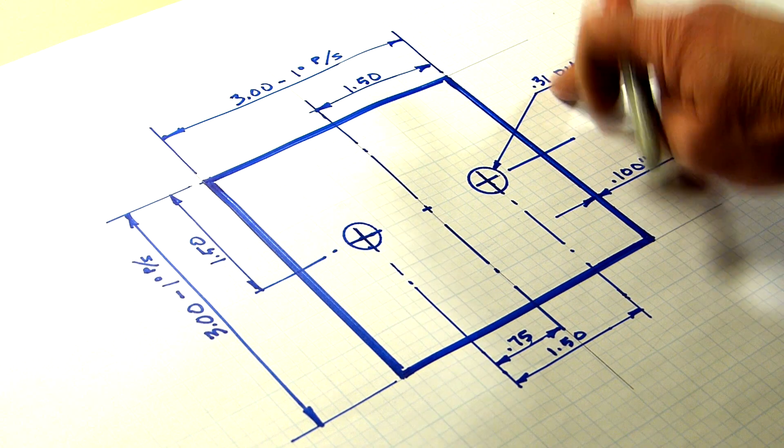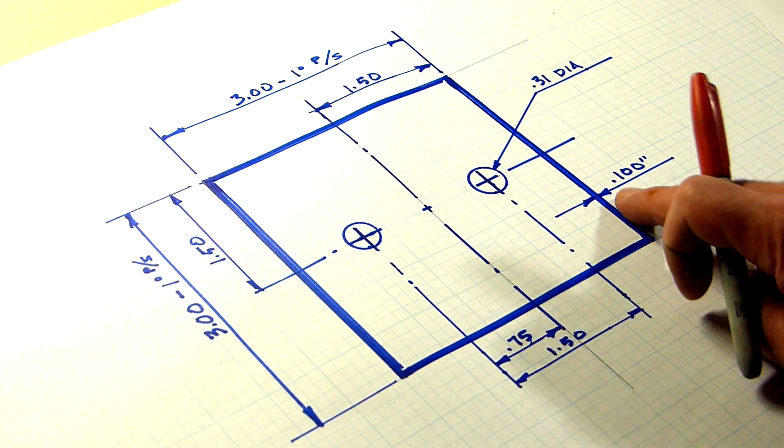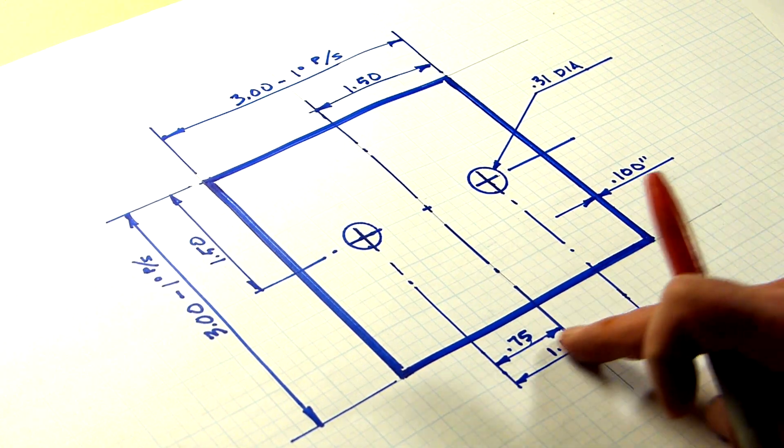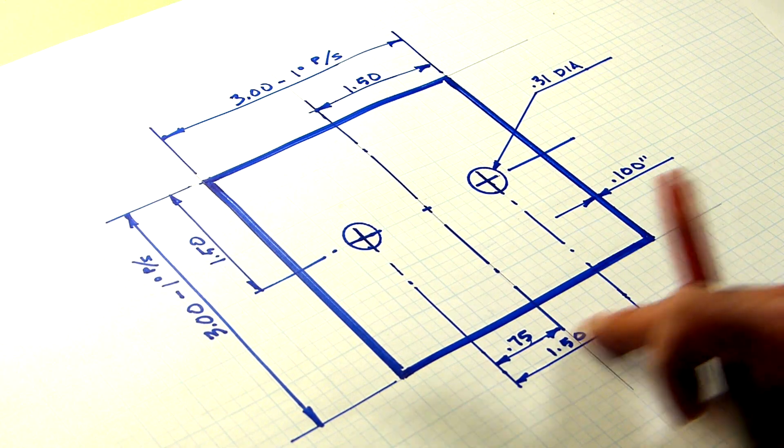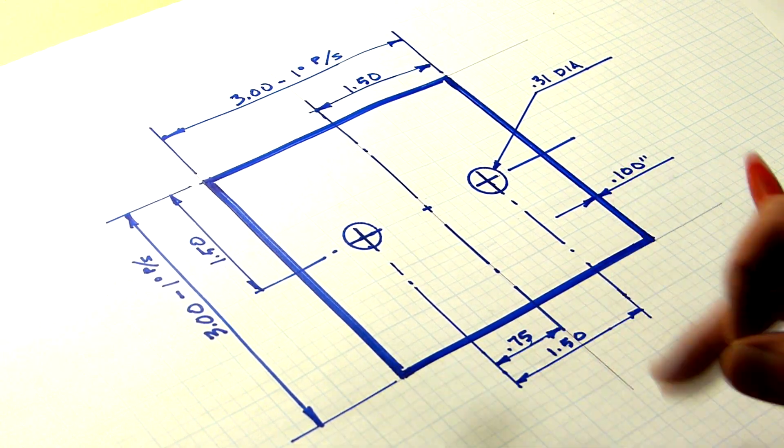3.31 diameter, 5/16ths, 100 thousandths wall thickness, and these holes are an inch and a half apart. It's based on center line and three quarters of an inch apart.